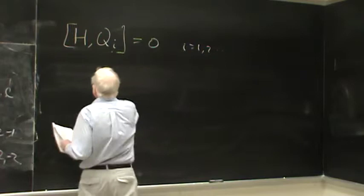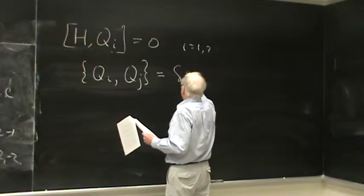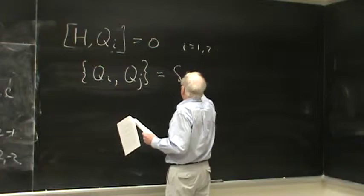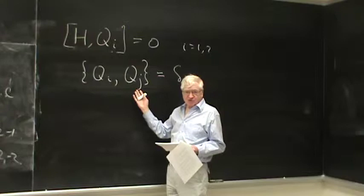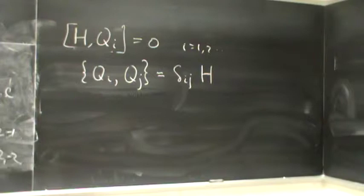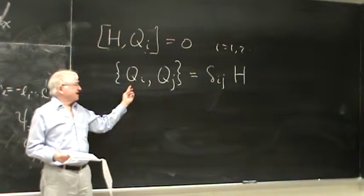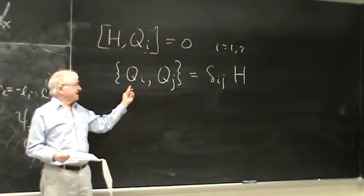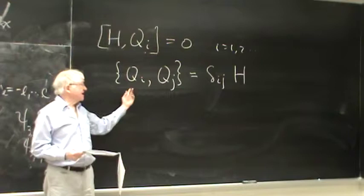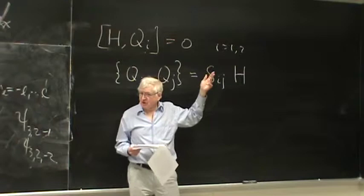The idea is that the anti-commutator of any two of these supercharges is zero unless it's the same supercharge — so these supercharges all anti-commute. But if it's the same supercharge, this is just twice the square of the supercharge, and that equals H. This is the quantum mechanical analog of what happens in quantum field theory, where you have charges that are spinors with a spacetime index, and the anti-commutator gives you Pauli matrices dotted into the four-momentum.